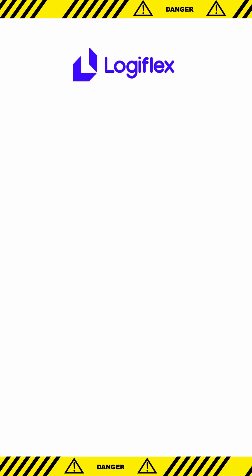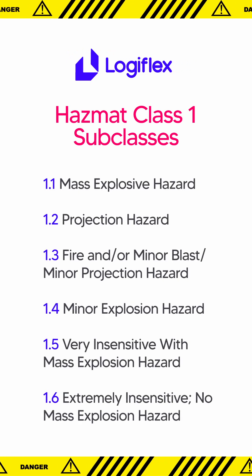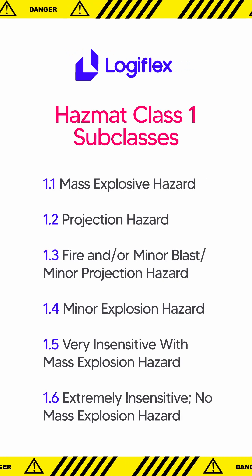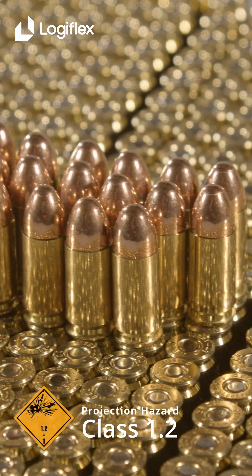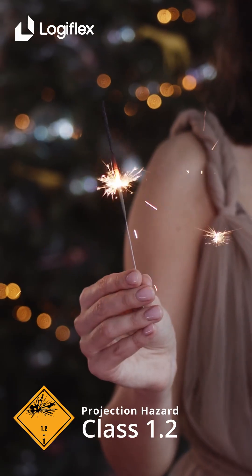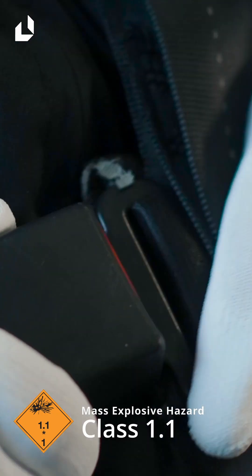Explosives belong to Class I and are divided into 6 subclasses. Some examples of Class I hazmat products include ammunition, gunpowder, fireworks, airbag inflators, and seatbelt pretensioners.